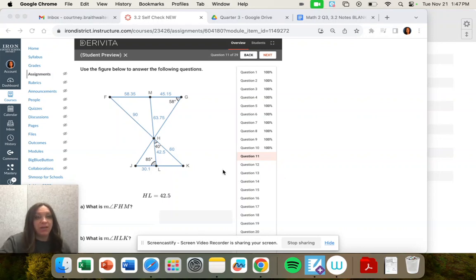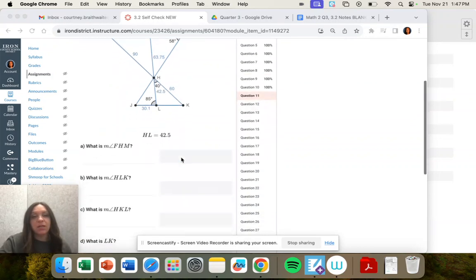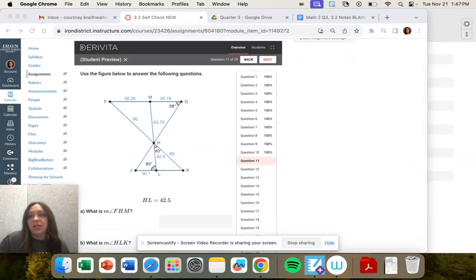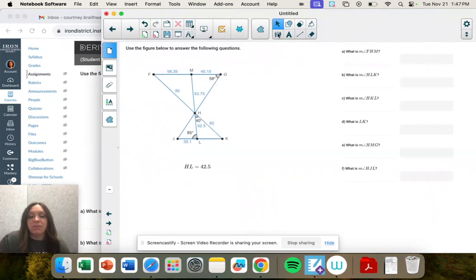Question 11. We have this figure with a lot going on, and there's all these things to find. So let's start going through them. So angle F to H to M. So F, H, M. So this angle, what is that angle?